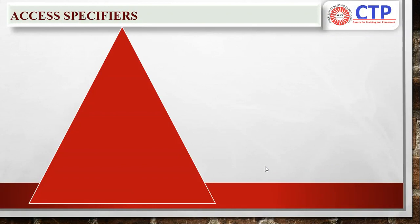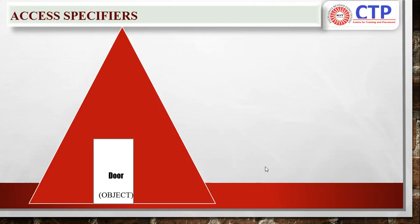Now let me stop with access specifiers. What do you mean by access specifier? It helps us to restrict and hide your data — data hiding is possible with the help of an access specifier. For understanding this, I'm going to give you a simple real time example. Consider a triangle as a home. If you want to enter into the home, then how will you enter it? With the help of a door. If you consider your home as a class, then the door is considered as an object. If you want to access any properties of a class, you should access it only with the help of an object.